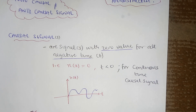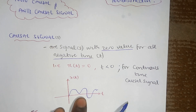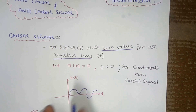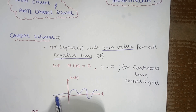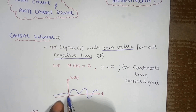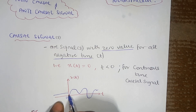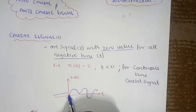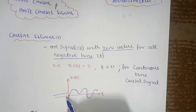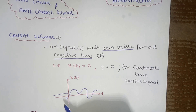The causal signal can be discrete or continuous. If it is continuous, like in this case, x(t), which is a continuous signal, does not have a value on the negative axis. So for t less than zero, its value is zero. It only has value in the positive axis. You can define it in two ways: either as a signal with zero value for all negative time, or a signal with value for all positive time, as you can see in this case.